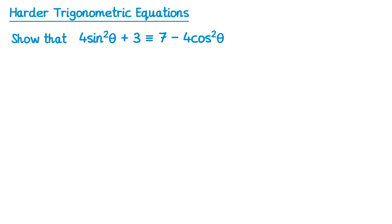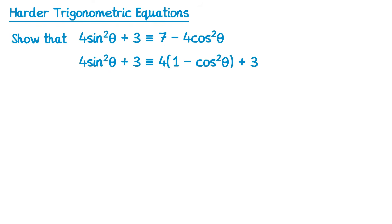Sometimes identities are not so straightforward. Here we've been asked to show that an identity is true rather than solve anything yet. Starting with the left hand side, 4 sin squared theta plus 3, we change sin squared theta to 1 minus cos squared theta, giving 4 times 1 minus cos squared theta plus 3. Expanding: 4 minus 4 cos squared theta plus 3. Collecting the constants gives 7 minus 4 cos squared theta, which is what we needed to show.